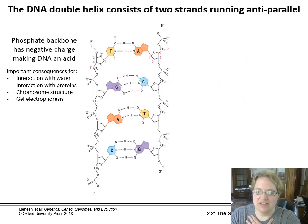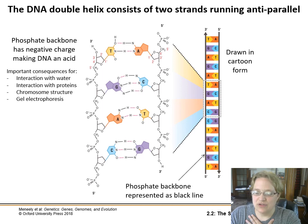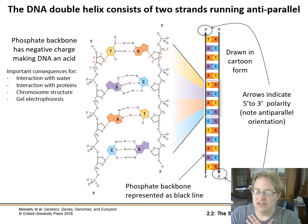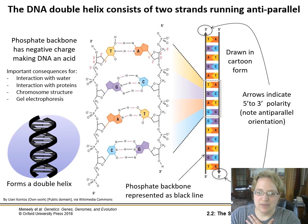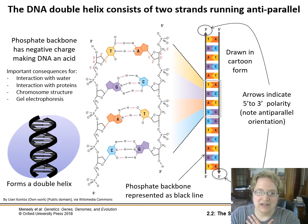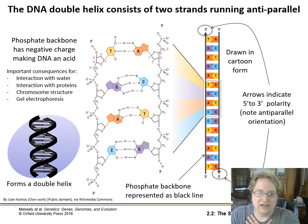When we talk about the DNA double helix running antiparallel, it means the two phosphate backbones have hydrogen bonds between their nucleotides, but one strand runs 5' to 3' while the other runs 3' to 5' — they go in opposite directions. As they do this they form a double helix with a major groove and a minor groove. The phosphate backbone on the outside is negatively charged, making DNA act as an acid — deoxyribonucleic acid — and this determines how it interacts with water, proteins, chromosomes, and even how gel electrophoresis works.